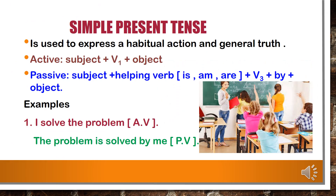Next, we will see the first type: simple present tense. Simple present tense is used to express a habitual action and general truth. We will see the rules of active and passive voice in simple present tense. In active voice: subject plus V1 plus object, where V1 is the present form of the verb. In passive voice: subject plus helping verb (is/am/are) plus V3 plus 'by' plus object.